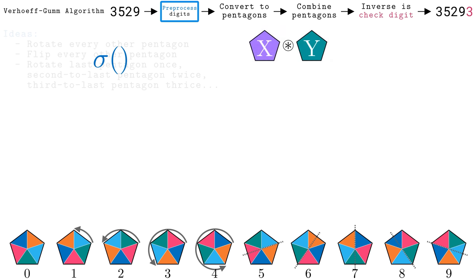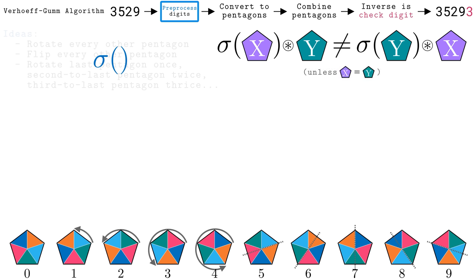These are all reasonable ideas in that they introduce some asymmetry to hopefully detect transpositions. However, it is not clear to me if they actually help. We need to prove it. Whatever function we use to preprocess the functions, let's call it sigma, or as a friend of mine calls it, O with a hairdo. The proof I like starts with two pentagons that are about to be combined, and applies sigma to the first, but not the second, similar to the Luhn algorithm. Then we need to show if we transpose the two pentagons, we will get something different, unless the two pentagons were the same. But how do we prove anything algebraic with pentagons?